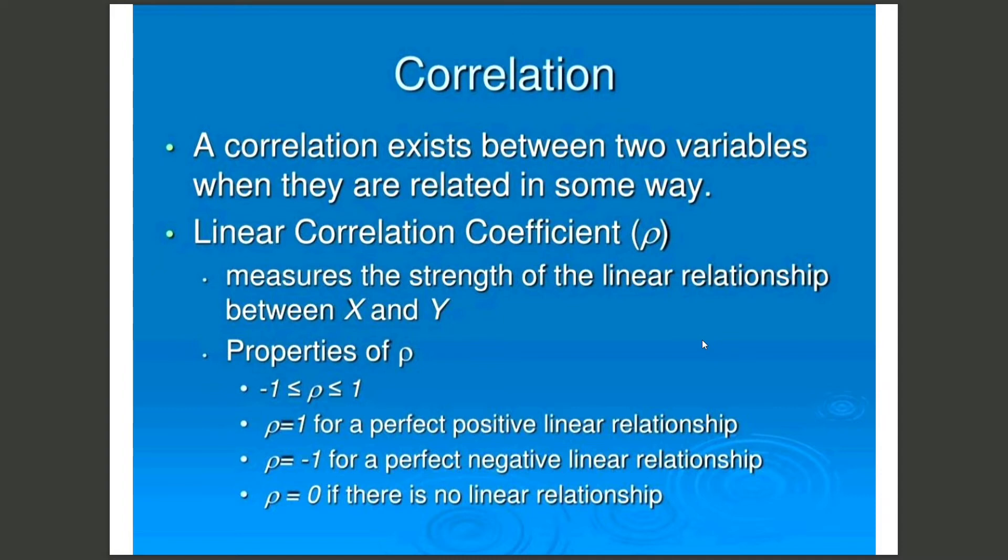Properties of linear correlation coefficient: Firstly, minus one is less than or equal to rho less than or equal to one. If rho equals one, for a perfect positive linear relationship. If rho equals minus one, for a perfect negative linear relationship. If rho equals zero, there is no linear relationship.